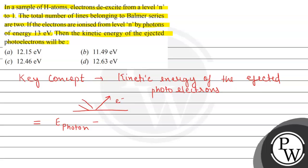For this, the key concept is the kinetic energy of the ejected photoelectrons. When light strikes a metal surface, electrons are ejected and possess kinetic energy. The formula is: kinetic energy equals the energy of the photon minus the binding energy. The energy of the photon is given as 13 electron volts.